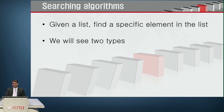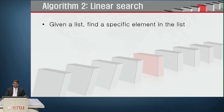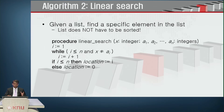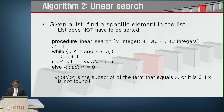Next is the searching algorithm: given a list, find a specific element. There are two types — linear search (sequential search) and binary search. For linear search, the list does not have to be sorted. The procedure iterates with a while loop: while i is less than or equal to n and x is not equal to a_i, set i equals i plus 1. If i is less than or equal to n, report the location; else the location is 0.